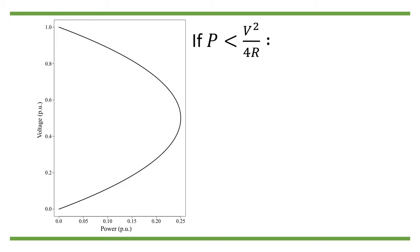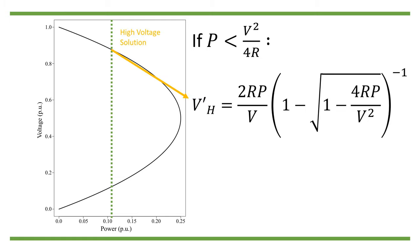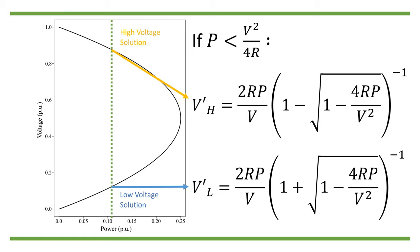On the graph, we can also see what happens if P is less than V squared divided by 4R. We will have two solutions. Taking the minus sign in the bracket, we will get a high voltage solution, while taking the plus sign in the bracket, we will get a low voltage solution. The set of high voltage solutions is sometimes called the high voltage branch, and the set of low voltage solutions, the low voltage branch. As seen clearly on the graph, the two branches meet at the bifurcation point.